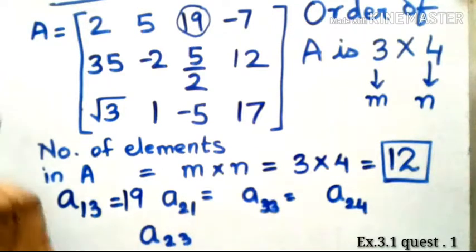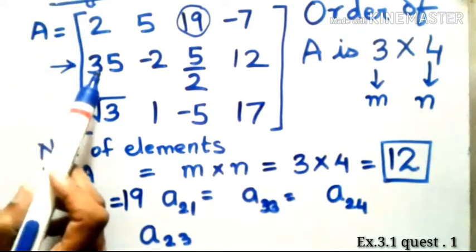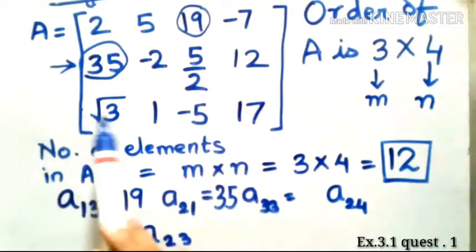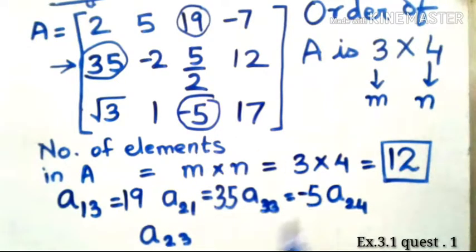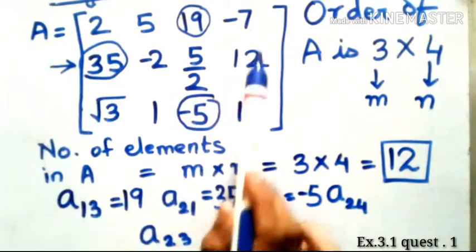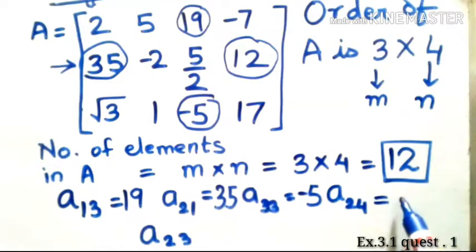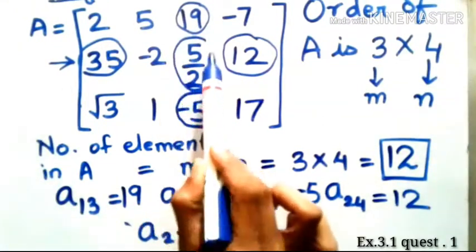For a₂₁, the second row and first column gives 35. For a₃₃, the third row and third column gives −5. For a₂₄, the second row and fourth column gives 12. And for a₂₃, the second row and third column, the value is 5/2. This answers all three parts of the first question.